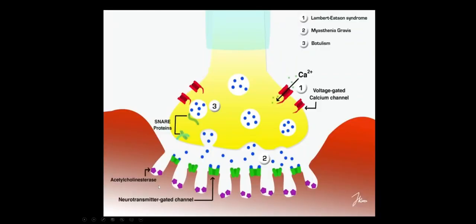There are three main neuromuscular junction disorders. Two are presynaptic: if we have antibodies against voltage-gated calcium channels, that's Lambert-Eaton syndrome, and we don't release enough acetylcholine. If snare proteins are disrupted by botulism, again we don't have release of acetylcholine. Myasthenia gravis, on the other hand, is a postsynaptic problem where we have antibodies against the nicotinic receptors, so release of acetylcholine is normal in myasthenia gravis.